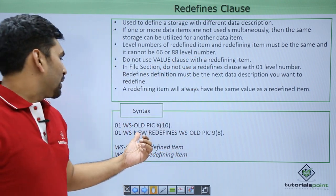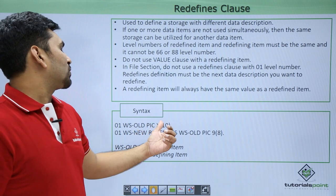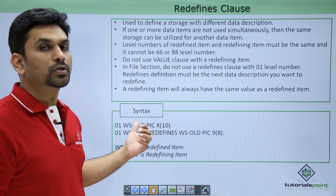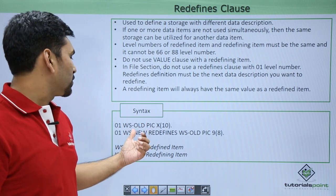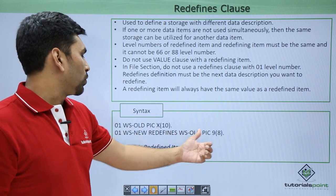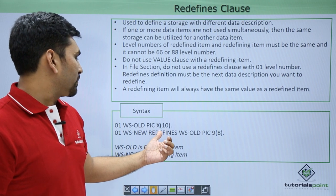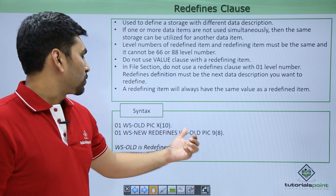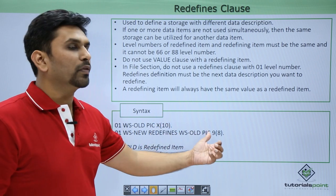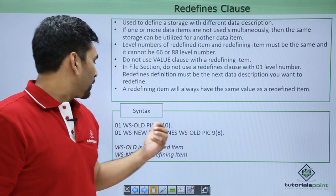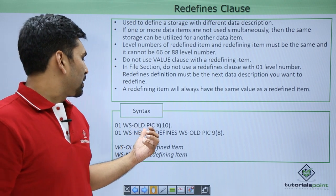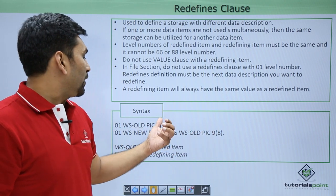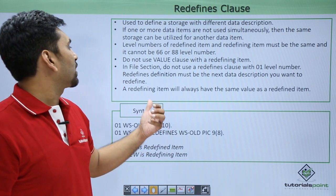We will see this in an example. Here you can see WS-OLD PIC X(10). This is our variable which we are not using simultaneously or frequently. Then we have WS-NEW REDEFINES WS-OLD — 'redefines' is our keyword. Here you can see that WS-OLD was declared as X and now WS-NEW is declared as 9. Still it will work because we are using the same memory location, and the values in both variables will remain the same.